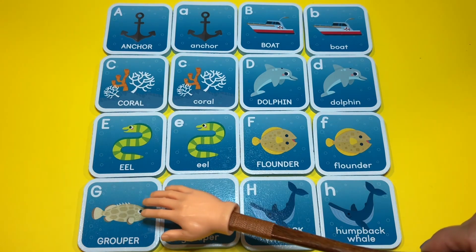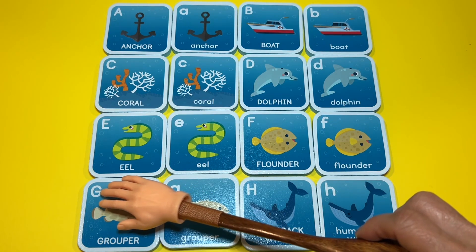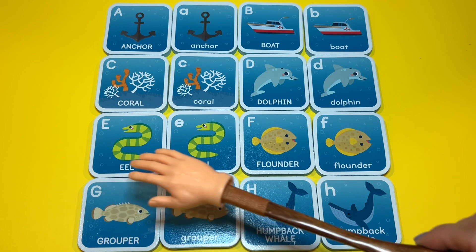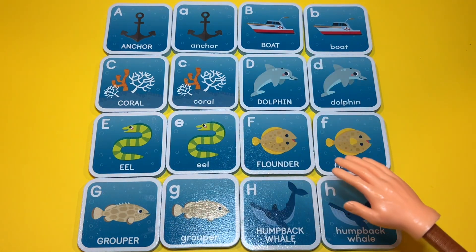This is a grouper. It starts with the letter G. This is a capital G and this is a lowercase g.